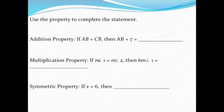Let's use these properties we've just looked at to complete a couple statements. First up is the addition property, which tells me that I can add the same thing to both sides of the equation. They start me out with AB and CB being equal to each other. Well, if we add 7 to one side, we know that we have to add 7 to the other side. So I'll complete this statement by saying CB + 7.